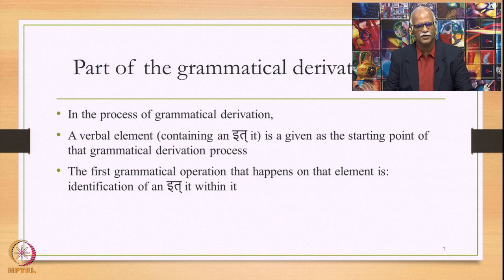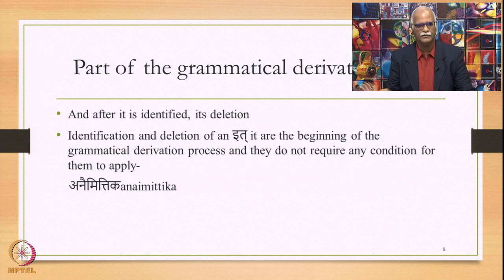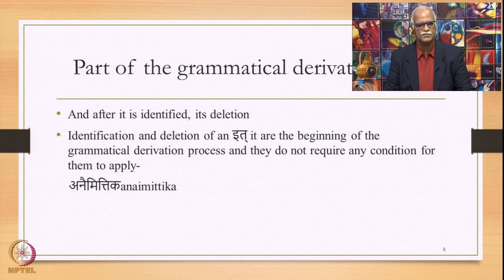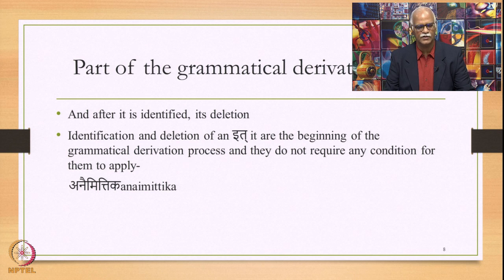This is a part of grammatical derivation. In the process of grammatical derivation, a verbal element containing an ith is given as the starting point. The first grammatical operation that happens on that element is identification of the ith within it. After the ith is identified, it is deleted — so identification and deletion of an ith sound are the beginning of the grammatical derivational process, and they do not require any condition or environment for them to apply. That is why they are called in Sanskrit 'anaimittika.'